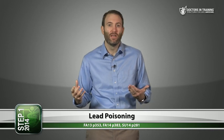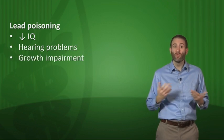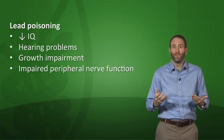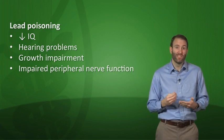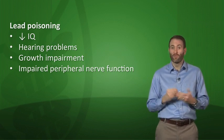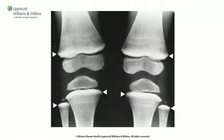Now let's talk about lead poisoning. Early signs include decreased IQ, hearing problems, growth impairment, and peripheral neuropathy — leading to wrist drop or foot drop. Lead also interferes with normal cartilage remodeling in growing bones, producing lead lines visible on radiographic images. Lead lines also appear in the teeth and at the gum junction — these are called Burton's lines.